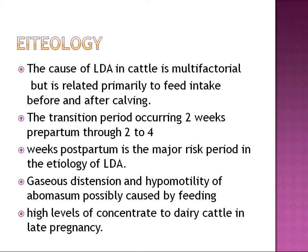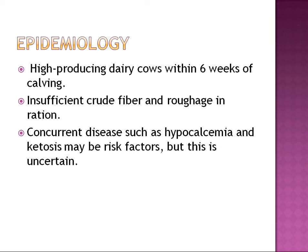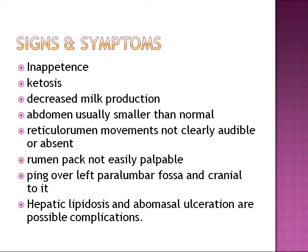Regarding epidemiology, high-producing dairy cows within six weeks of calving are most at risk. Insufficient crude fiber and roughage in the ration are contributing factors. Concurrent diseases such as hypoglycemia and ketosis may also be risk factors, though this is uncertain.